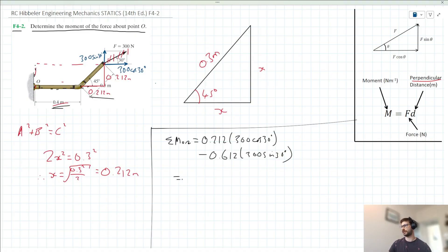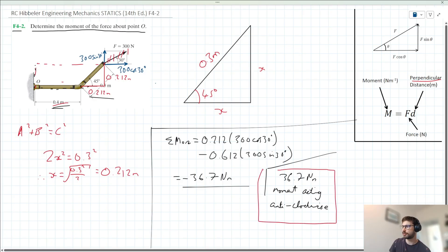Now we can put this into our calculator and this gives us a value of minus 36.7 newton meters here. So we could say we have 36.7 newton meter moment acting anticlockwise. And this is the solution to our problem here.